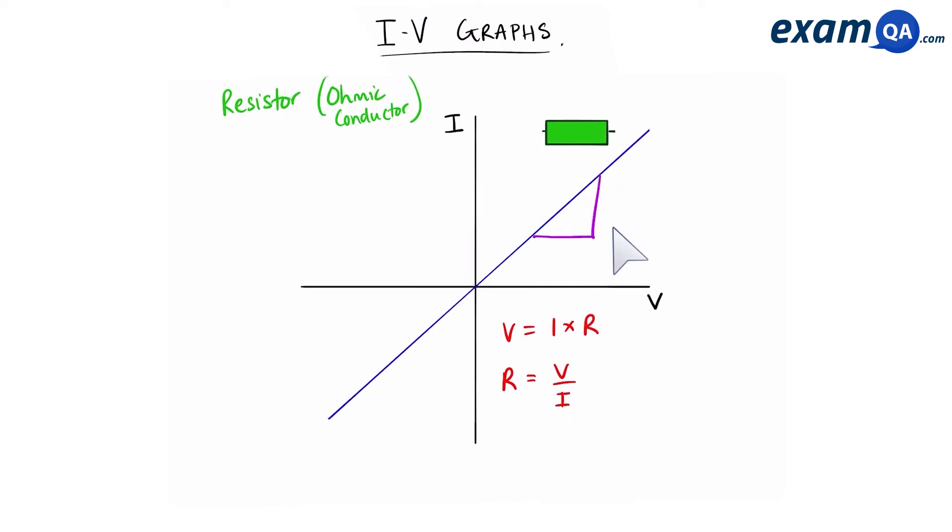To find a gradient we have to do Y over X. In this case Y is current and X is the voltage. So the gradient which we will represent by little m is going to be equal to Y over X or current over voltage. If I flip both sides of the equation that gives me 1 over M is equal to V over I. But we just learned that V over I is equal to R. So we can say that V over I equals to R. Therefore 1 over M, 1 over the gradient is equal to R. What does this mean?